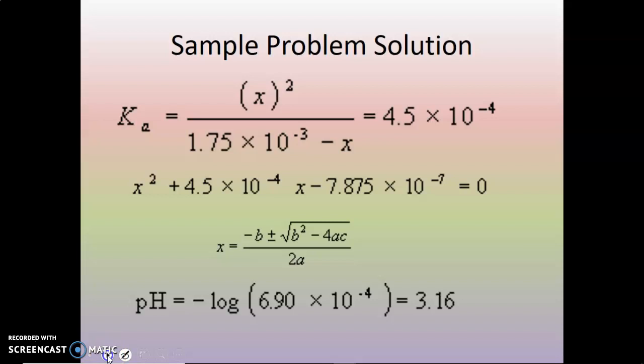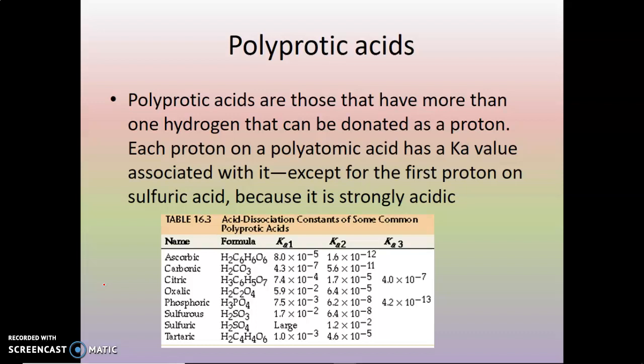Now we're going to continue on to polyprotic acids. Polyprotic acids are acids that have more than one proton. A hydrogen ion is a proton — H+ equals proton. Each proton on your polyprotic acid has its own Ka value, or acid dissociation constant, because each hydrogen ion dissociates with a different constant. Note that Ka1 is always much greater than Ka2, because it's much easier to remove the first hydrogen ion than the second, third, fourth, and so on.